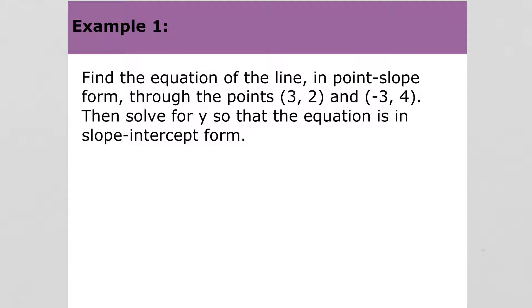Since we've got two points here, we can find the slope. The slope is the y values subtracted over the x values subtracted. So that's 2 over negative 6, or negative one-third.